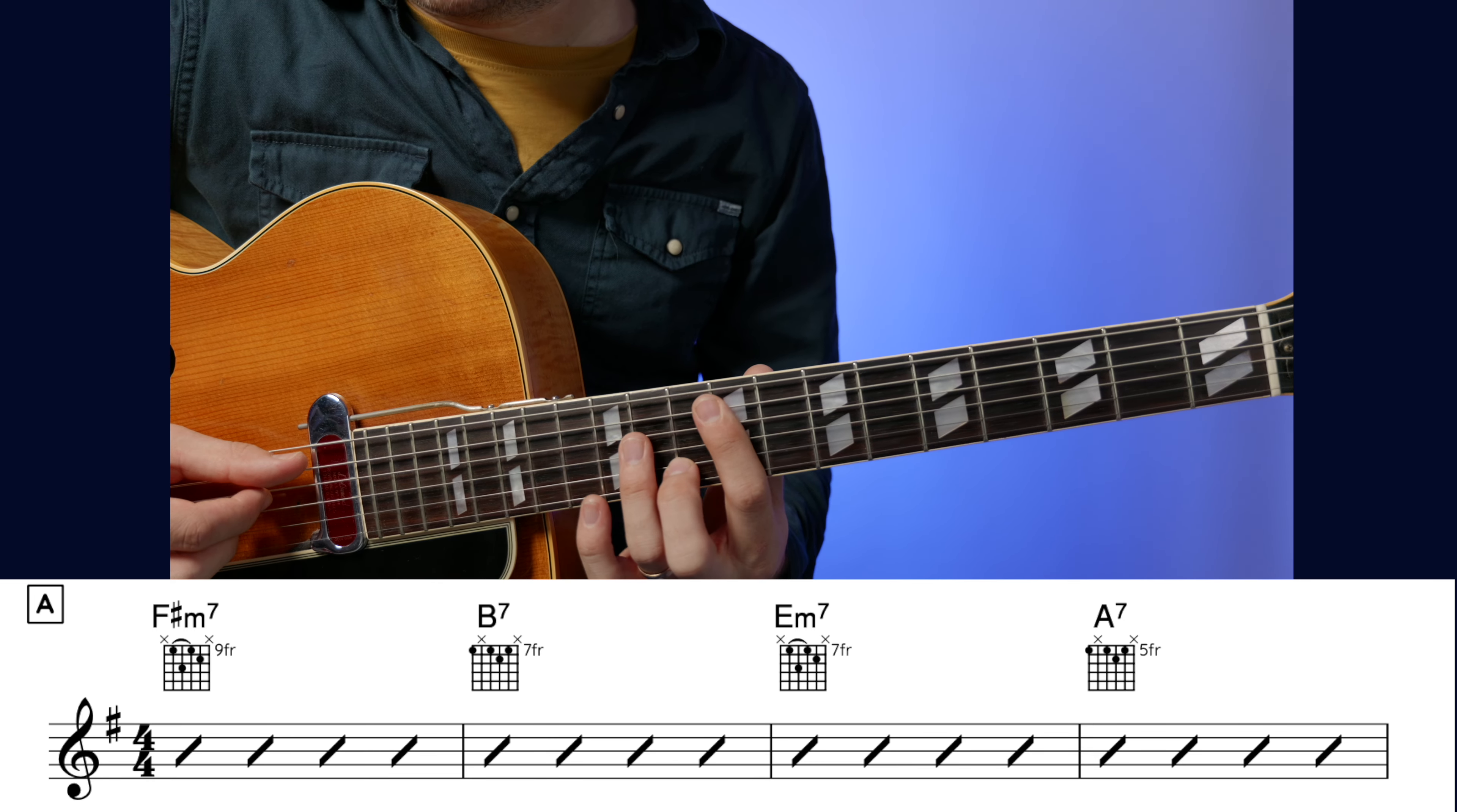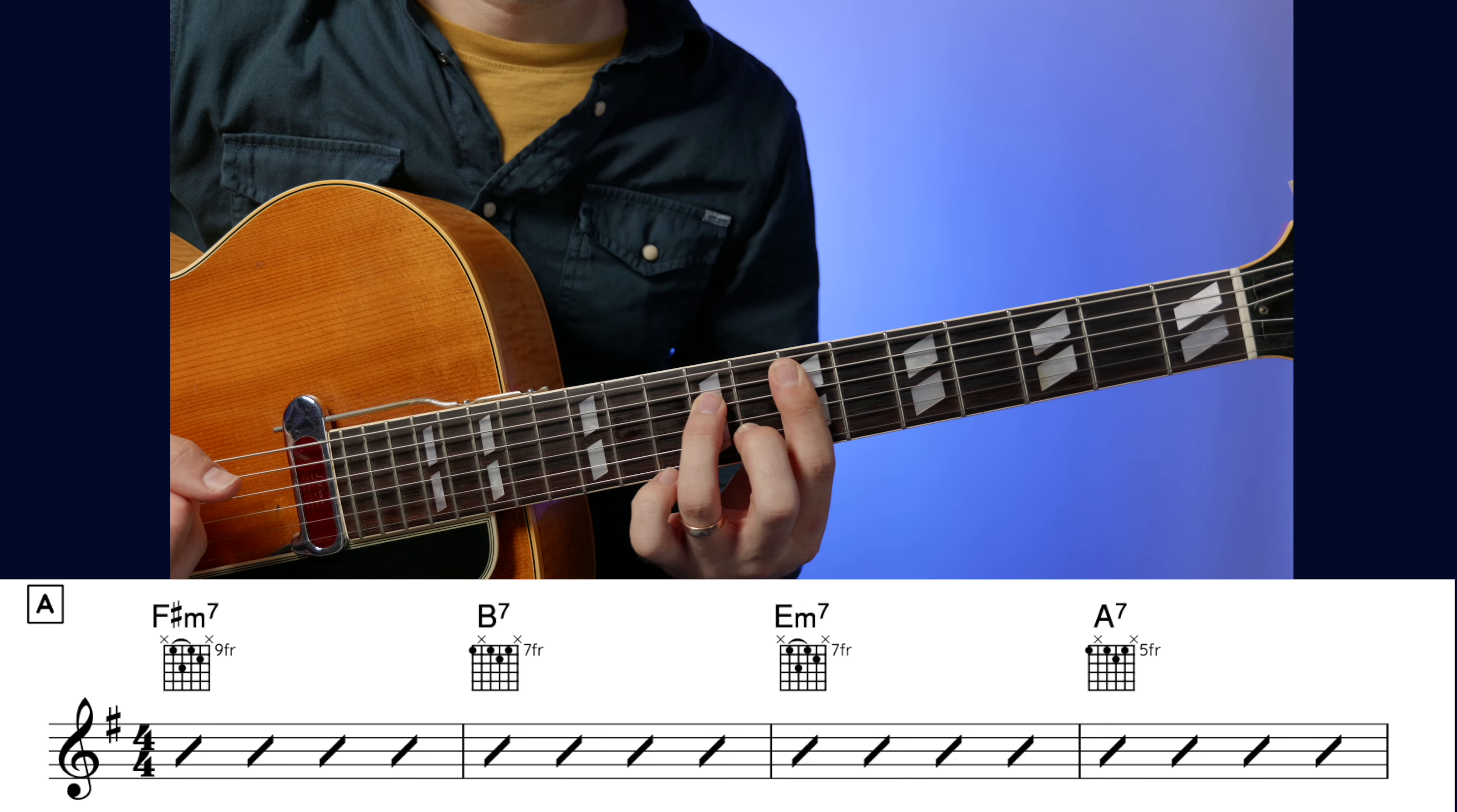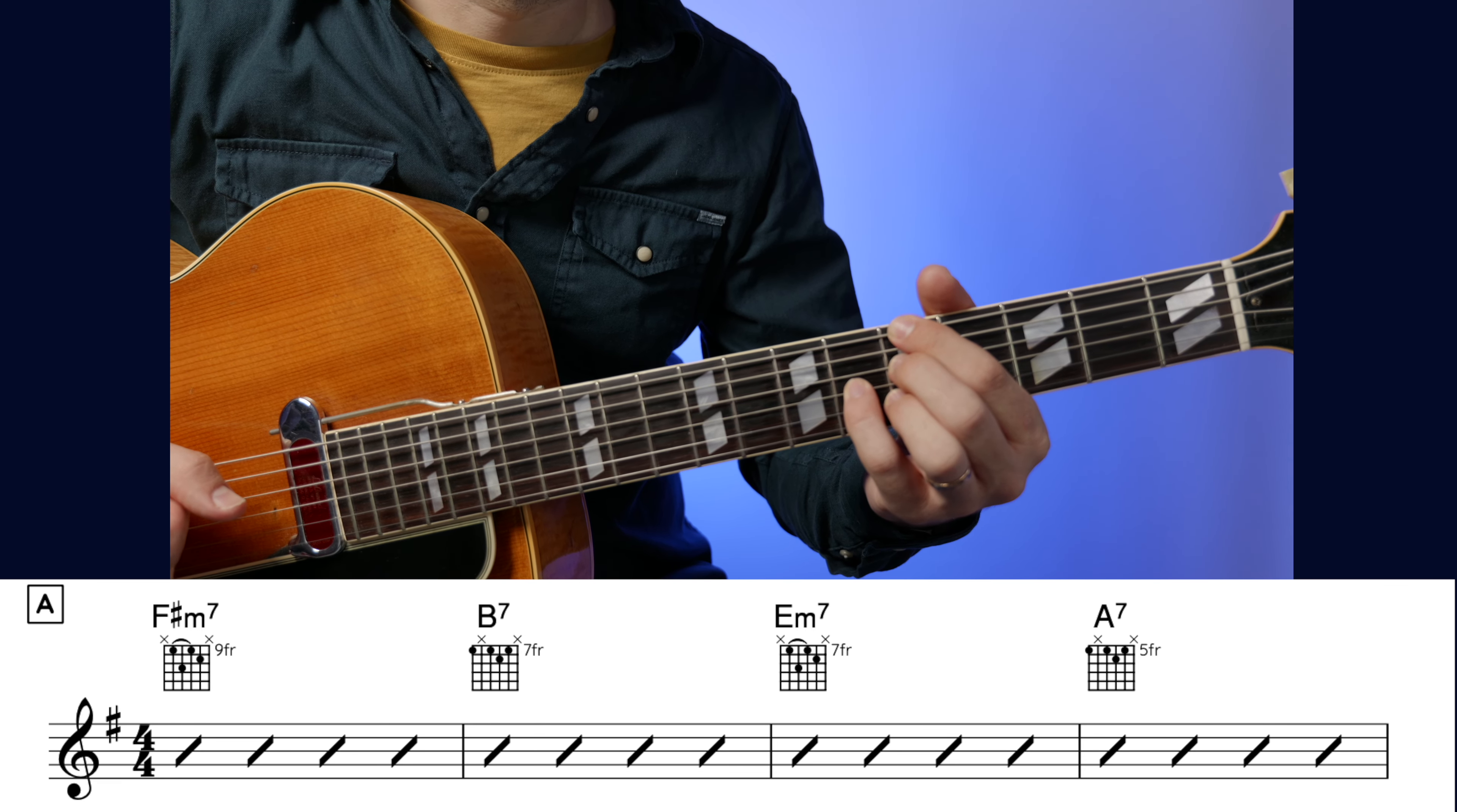Here's the chords for the A section. So we start out on F sharp minor 7 off the E string, moving to B7, to E minor 7. I'm picking the individual notes of the chords so you can hear the chord movement a bit more when you do that. Moving to A7. So we've got F sharp minor 7, B7, E minor 7, to A7, bar of each.